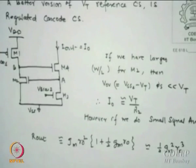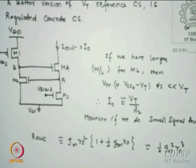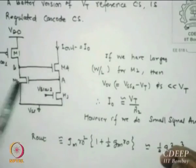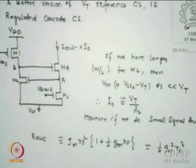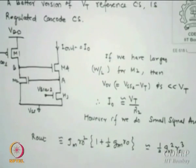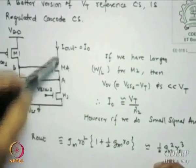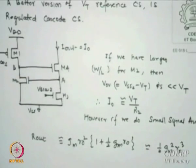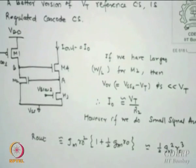A better version of the VT reference current source is called the regulated cascode current source. This part - M2, M4, M1 - is the same as before. All that has been replaced is R by a transistor biased by choice. The M4 and M3 combination acts like a cascode, which boosts the output resistance.